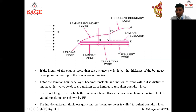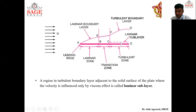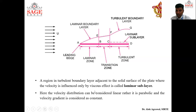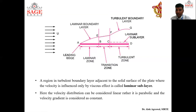Further downstream, the thickness of the boundary layer grows further and we call this the turbulent boundary layer, shown by FG, while CD is the turbulent zone. However, very near to the solid body within the turbulent zone, there exists a laminar sub-layer where the influence of viscosity is high. Because of this high viscosity effect, a very small portion near the plate shows laminar behavior even inside the turbulent zone. In this laminar sub-layer the velocity distribution follows a parabolic path and the velocity gradient is considered constant. In the next class we will see boundary layer thickness.